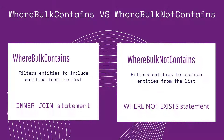The Where Bulk Not Contains method is similar to the Where Bulk Contains method, but it filters entities not contained — or excluded — instead of contained, or included. The Where Bulk Contains method filters entities to include entities from the list, which is an inner join statement. The Where Bulk Not Contains method filters entities to exclude entities from the list — it is a Where Not Exists statement.